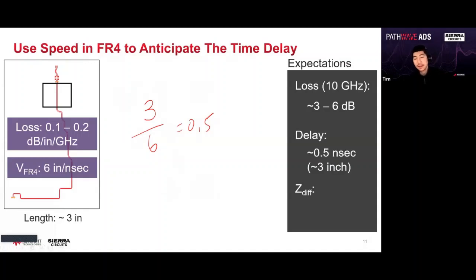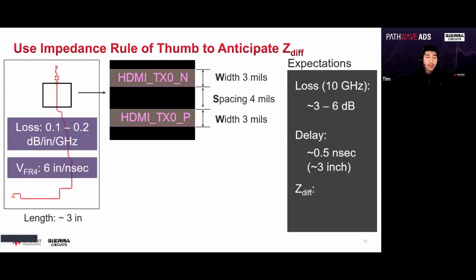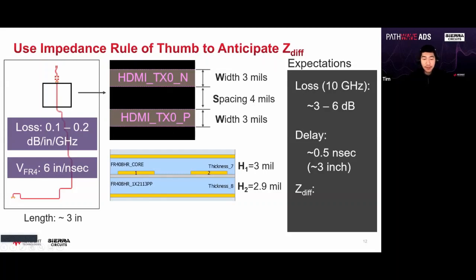Now for impedance, I'll get the crowd involved — but first let me give a bit more information. Looking at the HDMI traces more closely, the width is 3 mils with a spacing of 4 mils. The stack-up looks as follows: we have a height of 3 mils on top and a height of 2.9 mils at the bottom, so very close to 3 mils on both sides.